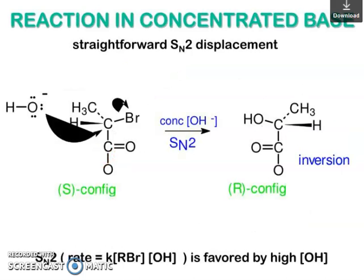In concentrated base, this is a straightforward SN2 displacement. So starting from S-configuration, you get R-configuration. You can see how OH⁻ is attacking and Br is leaving — inversion of configuration via SN2. The SN2 rate depends on the substrate; the nucleophile is favored by high [OH⁻].